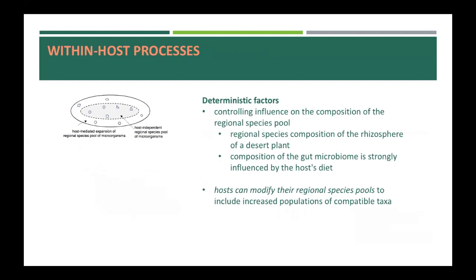From an ecological point of view, we can consider the microbial community within an individual host as a local community colonized from a regional species pool, comprising all the microbes that the host encounters in its environment. The abiotic environmental factors can have a controlling influence on the composition of the regional species pool. For example, the regional species composition of the rhizosphere of a desert plant differs significantly from that of a temperate plant, or the regional species composition of the gut microbiome of many animals is strongly influenced by the host's diet. Some hosts modify their regional species pools to include increased populations of compatible taxa. In animals, these often manifest as social or other behaviors and may involve the shedding of living microorganisms into the outside environment.